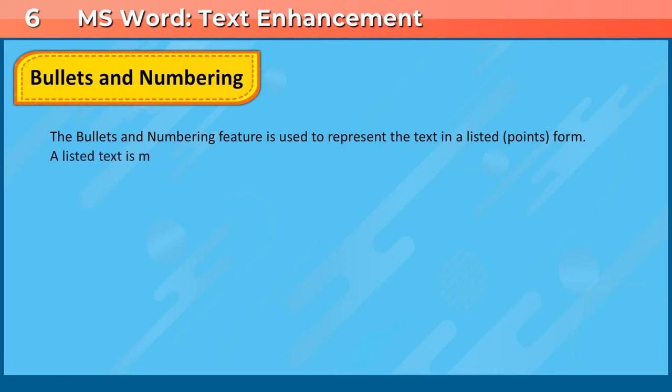Bullets and numbering. The bullets and numbering feature is used to represent the text in a listed points form. A listed text is more readable and easy to understand.